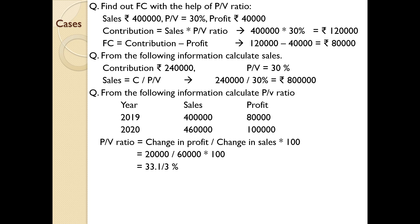The PV ratio usually will be a whole number like 20%, 30%, 44%, or 50%. In some situations, you may get a peculiar value such as 33⅓%.